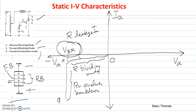The voltage VBR is nothing but the reverse breakover voltage. Normally, the reverse breakover voltage will always be lower than the forward breakover voltage, basically because of the change in the doping levels of the inner regions of the thyristor.